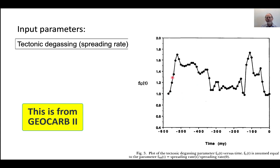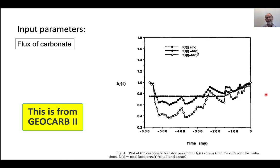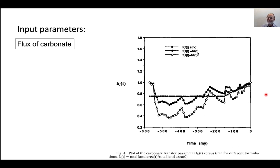Tectonic degassing is related to spreading rate. There are times when there's a higher spreading rate and greater rates of CO2 degassing, mainly from volcanic arcs and subduction. Today the degassing rate is pretty small because the spreading rate is slower. We can estimate the flux of carbonate from weathering. They use a standard curve and also put in two additional curves parameterized according to exposed surface area — one proportional to surface area and one proportional to surface area squared. That's something they tried in GEOCARB 2.